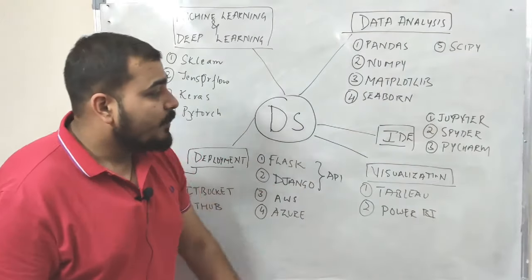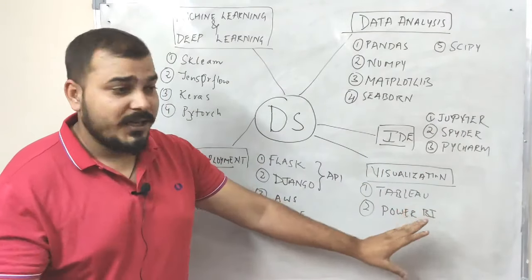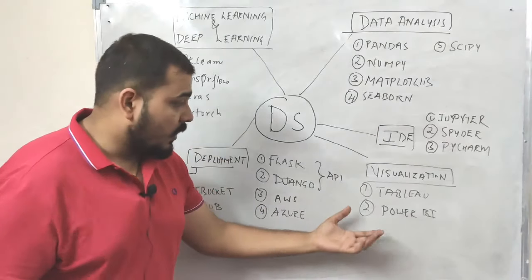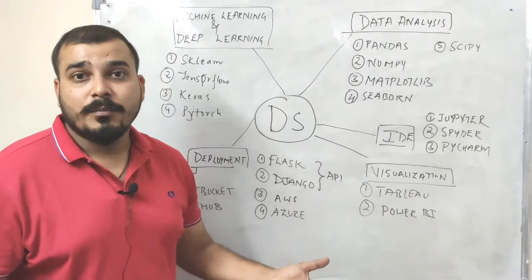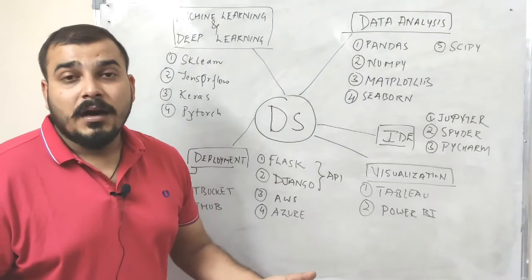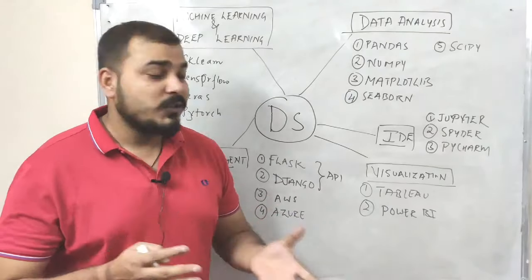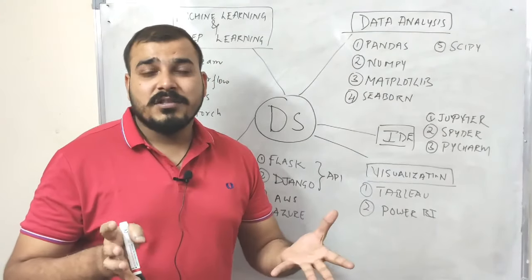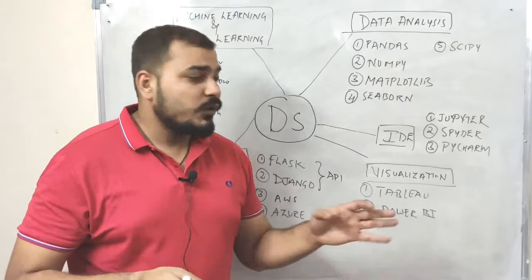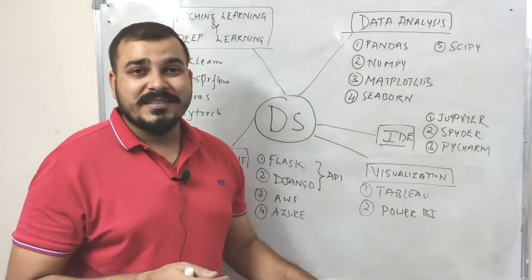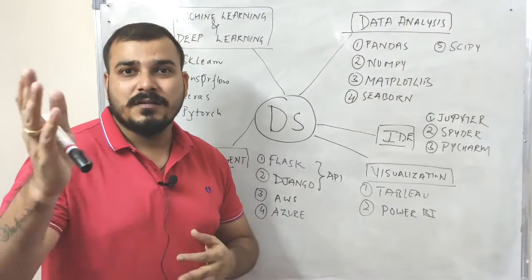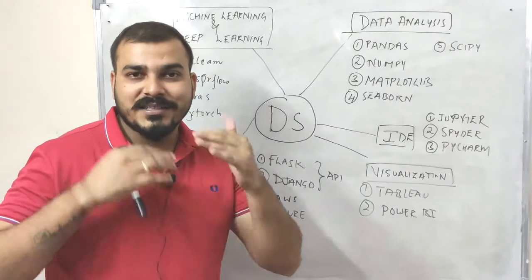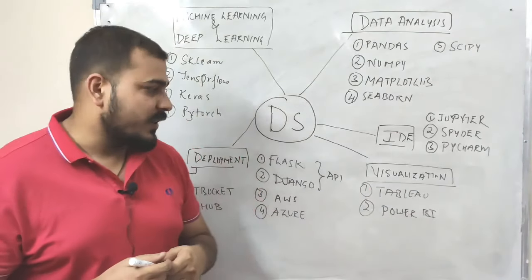For visualization third-party tools, you can use Tableau and Power BI. This is important because it helps us to create very good statistical diagrams and graphs. It also provides a reporting server, so you can publish reports to some server so that other stakeholders can basically use it.